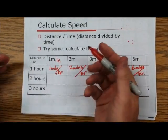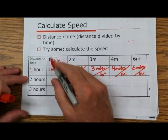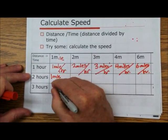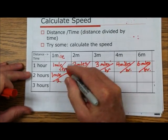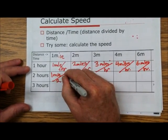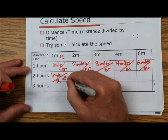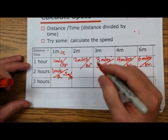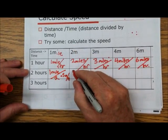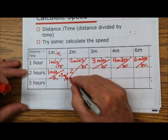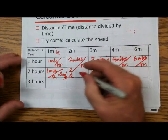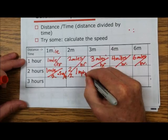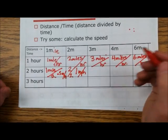It gets a little harder here, but it's the same principle. We have one mile divided by two hours, so that's one half, or 0.5 miles per hour. And this one is two miles divided by two. Two over two is the same as one — one mile per hour.